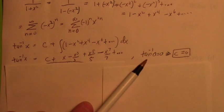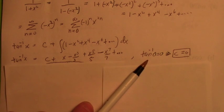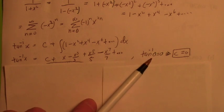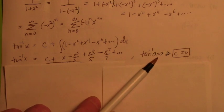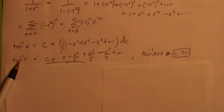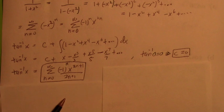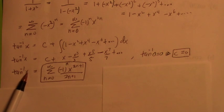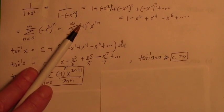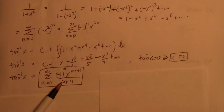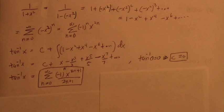We're trying to express inverse tangent as a power series. Inverse tangent of 0 is 0. If you look at this power series, inverse tangent of 0 means those all drop out as c, so c has to be 0. When you integrate term by term you end up with the power series for inverse tangent: negative 1 to the n, times x to the 2n plus 1, over 2n plus 1.